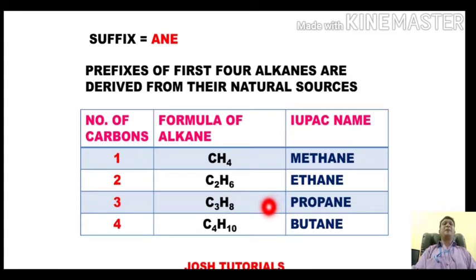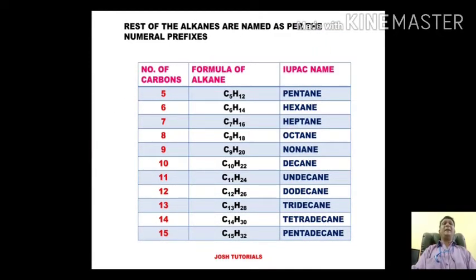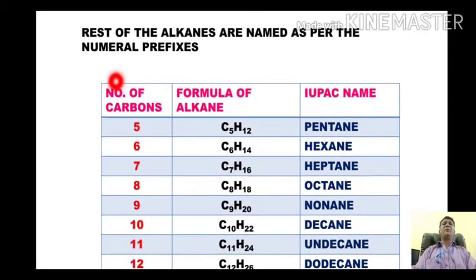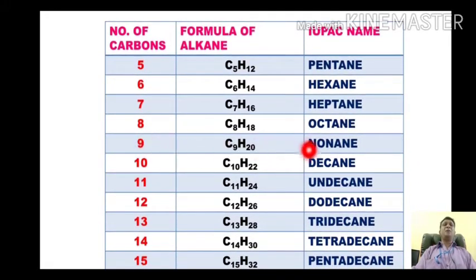From alkane number five onwards, they are named using numeral prefixes. For n=5, the formula is C5H12, called pentane. For n=6 it is hexane, for seven it is heptane. The alkane with eight carbons is called octane, with nine carbons is nonane, and with ten carbons is decane. The prefixes used are penta-, hexa-, hepta-, octa-, nona-, and deca-.